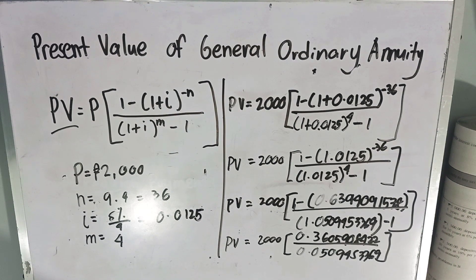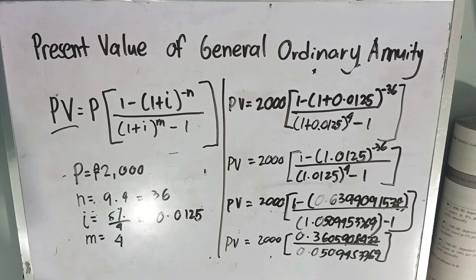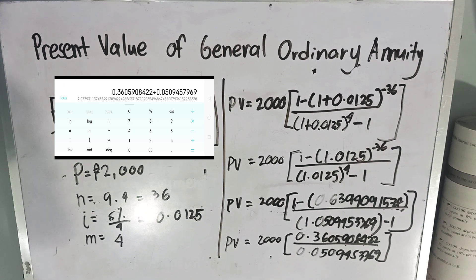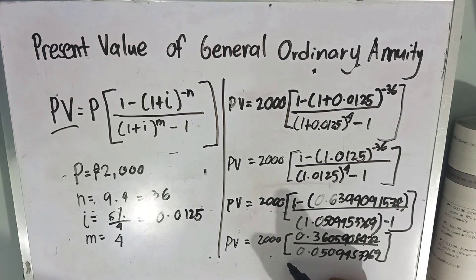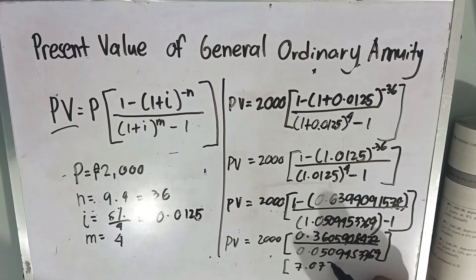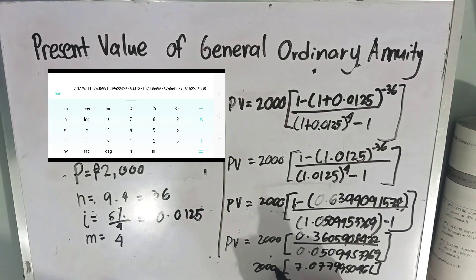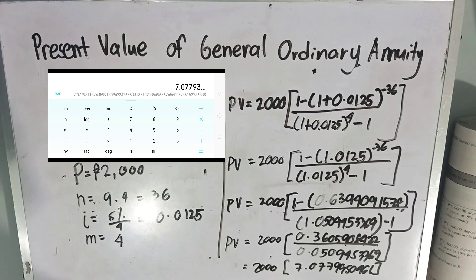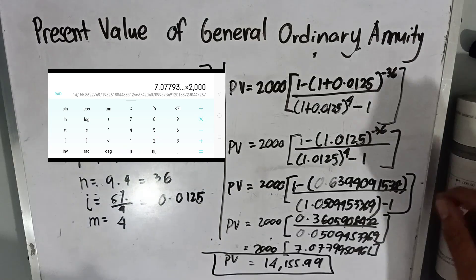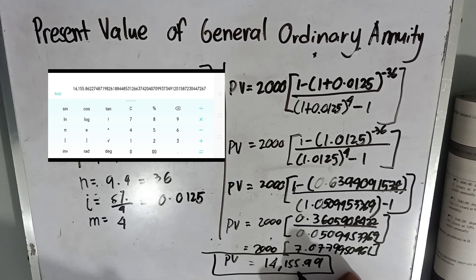Now dividing: 0.36059084 22 divided by 0.05094533698 equals 7.077799504 61. Multiplying by the principal of 2,000, our present value is 14,155.90 pesos.